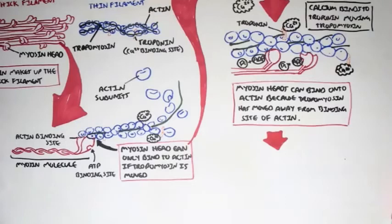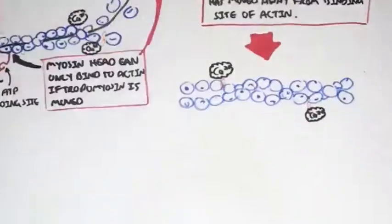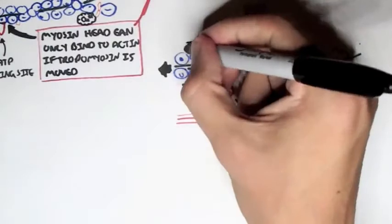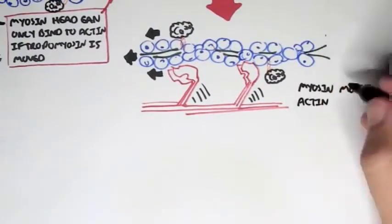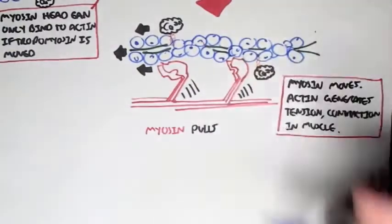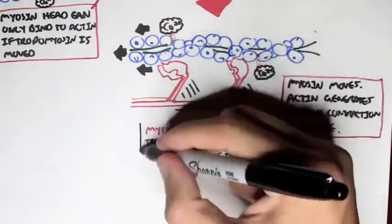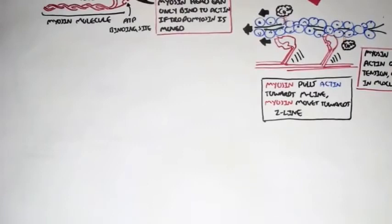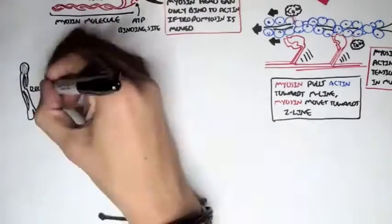Because tropomyosin has moved away from the binding site of myosin on actin, this enables the myosin molecules in red to pull the thin filaments towards the center of the sarcomere — towards the M line. And this is why it needs ATP. When this occurs, essentially when myosin moves, actin will generate tension and contraction in muscle. So again, myosin will pull actin towards the M line, and myosin itself will then move towards the Z line.